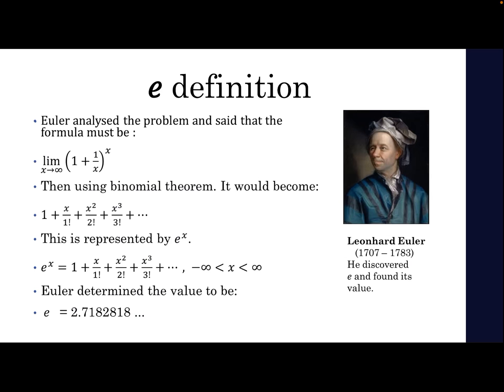e^x = 1 + x + x²/2! + x²/3! and the series goes on. Euler determined the value of e to be approximately 2.718.